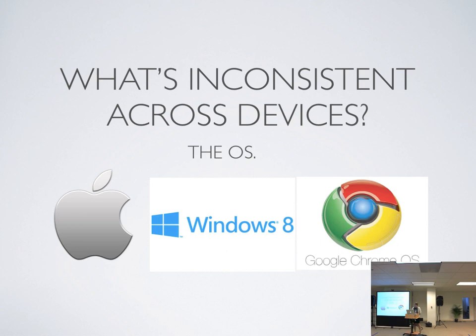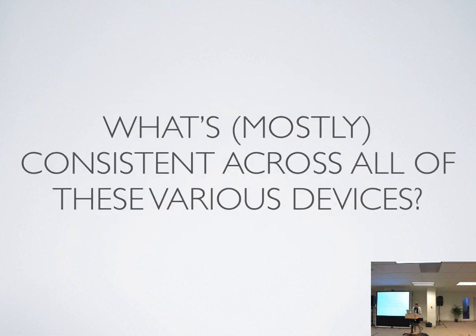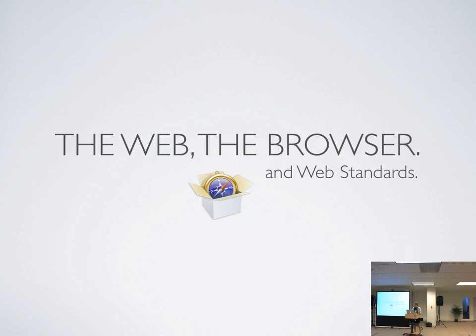So let's take a step back. What's mostly consistent across all these various devices? The web — the browser, web standards. All of them have a browser. You can tell anybody with a mobile device to go to mysite.com and they can look it up. They don't have to install anything, they don't have to download anything, and it's not available on their friend's phone but not theirs.